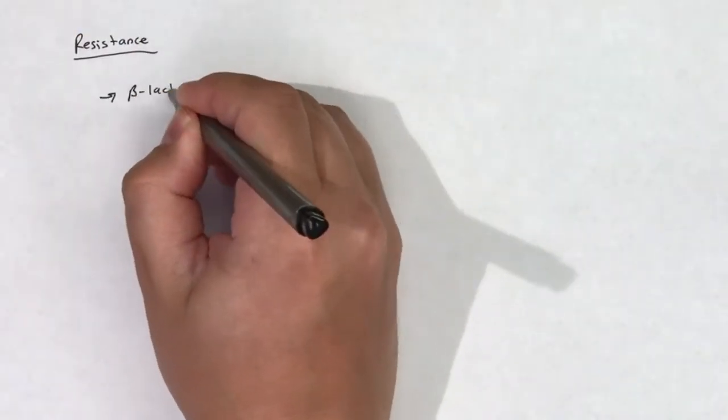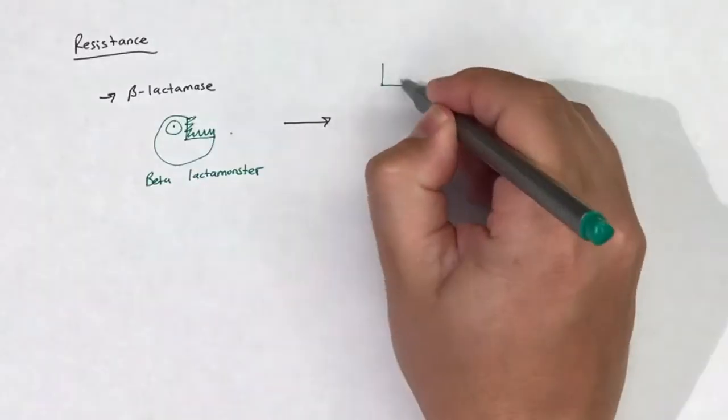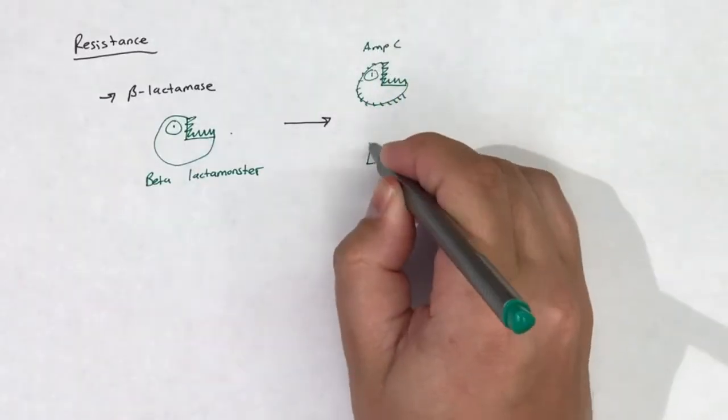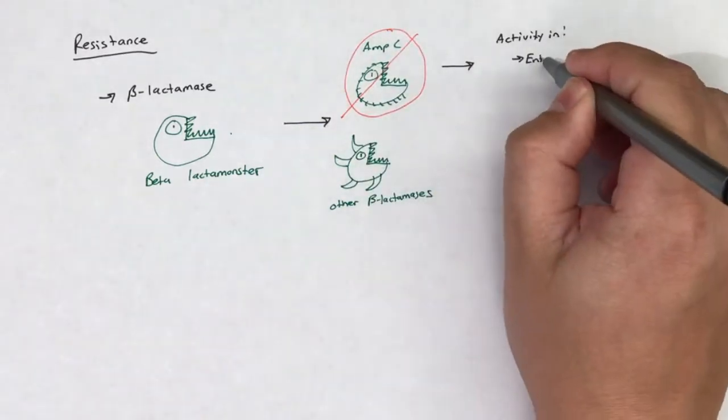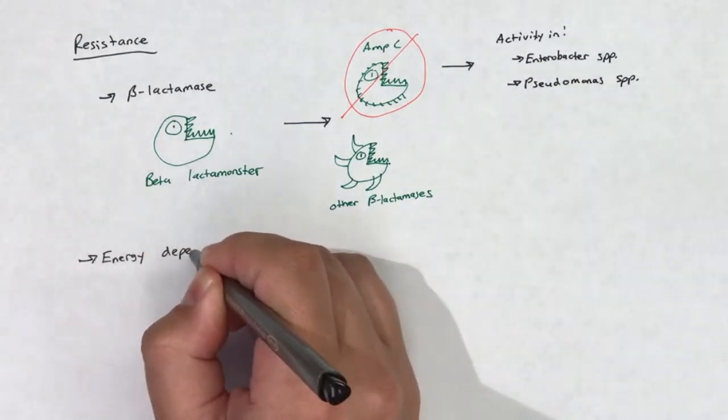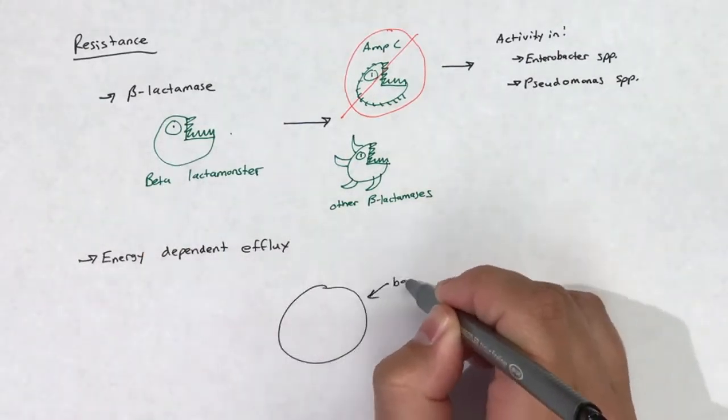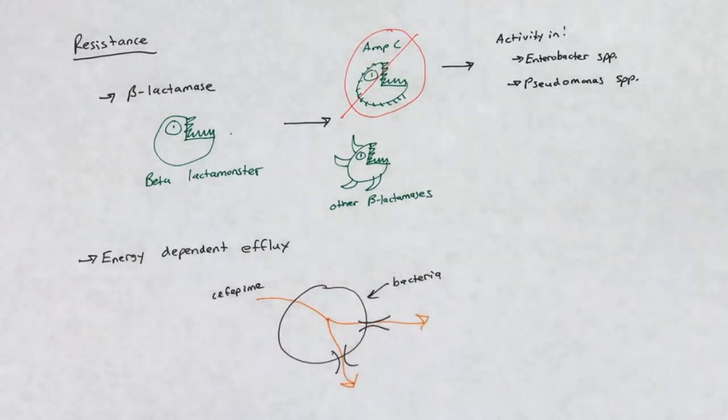Beta-lactamase degradation remains a concern with cefepime. However, cefepime is resistant to certain beta-lactamases, specifically AMP-C beta-lactamases, which allow cefepime to exhibit activity in enterobacter species and pseudomonas species. Energy-dependent efflux can still confer cefepime resistance in pseudomonas species. Cefepime shares mechanisms of resistance that other cephalosporins possess.